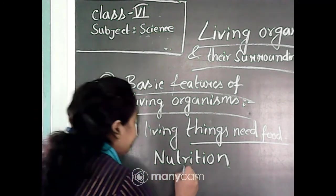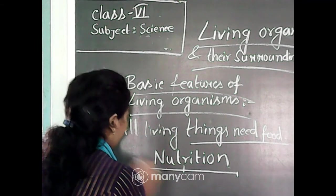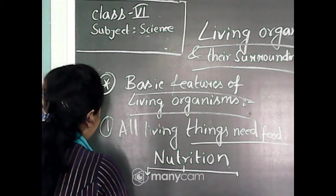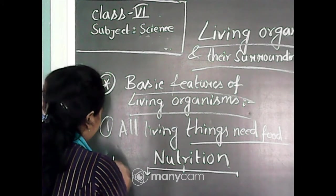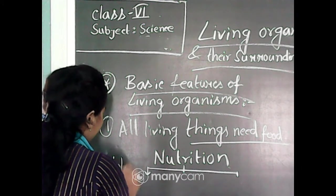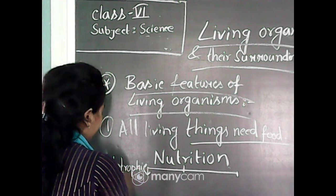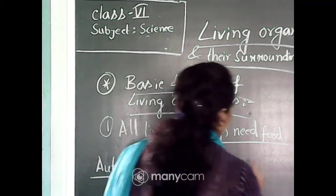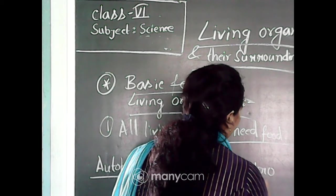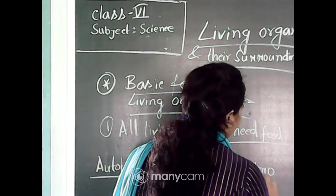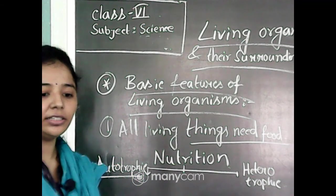Nutrition is basically of two types: one is autotrophic and another is heterotrophic.